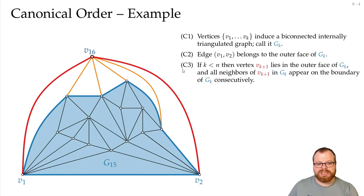What about C3? Well, the next vertex vk plus 1 v16 lies in the outer face, and the neighbors appear on the boundary consecutively, so everything is fine.